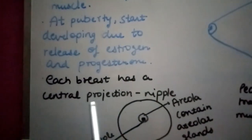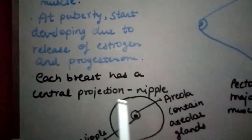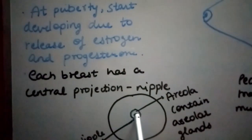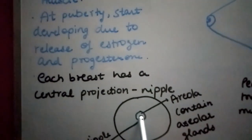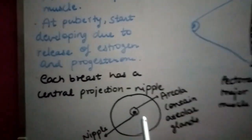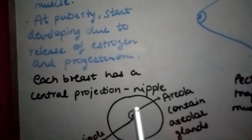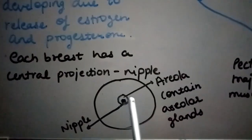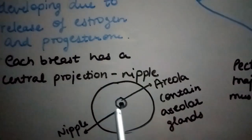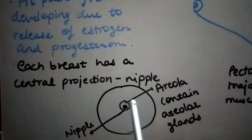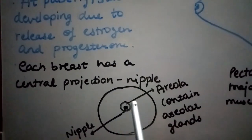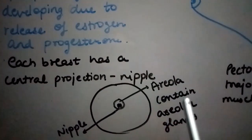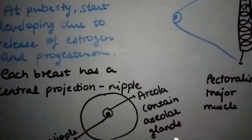Each breast has a central portion with a projection known as the nipple. Beside the nipple is a hyperpigmented area known as the areola, which contains areolar glands.